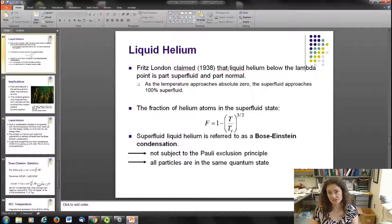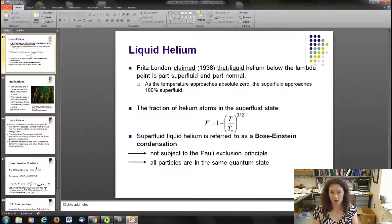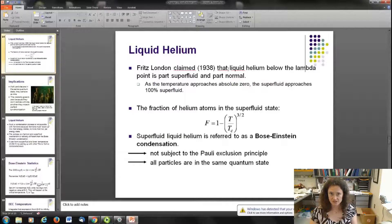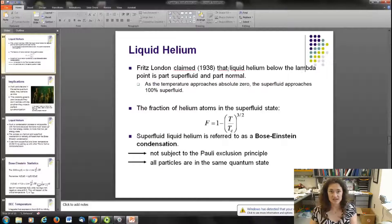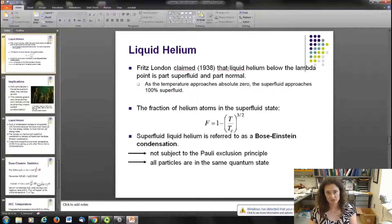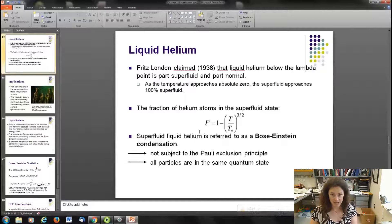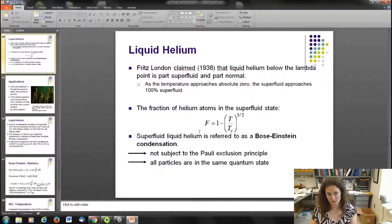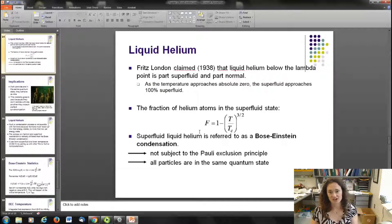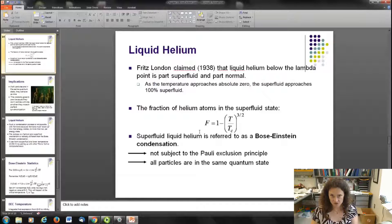Now, Fritz London, in a paper in 1938, actually said that liquid helium below the lambda point is part superfluid and part normal, and that as your temperature gets lower and lower, which they weren't really able to do very well in 1938, so this is a pretty incredible prediction for him to make, that the fraction of helium in that superfluid state changes as the expression 1 - (T/Tc)^(3/2), where Tc is the critical temperature. So superfluid liquid helium, the part of liquid helium that's in the superfluid state, is referred to as a Bose-Einstein condensate. You may have heard this expression in physics and kind of wondered what the heck they were talking about. So Bose-Einstein condensates are all particles that are in the same quantum state.